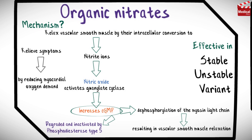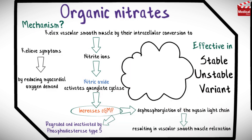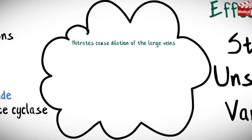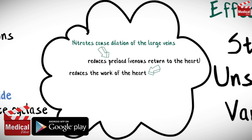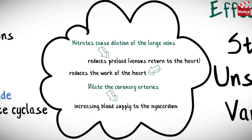cGMP is then degraded and inactivated by phosphodiesterase type 5, which terminates the action of nitric oxide. Nitrates cause dilation of the large veins, which reduces preload and venous return to the heart, reducing the work of the heart. They also dilate the coronary arteries, increasing blood supply to the myocardium.